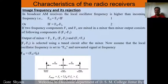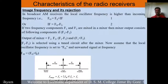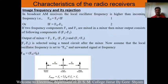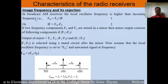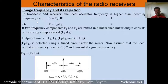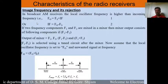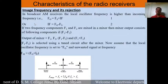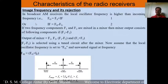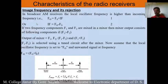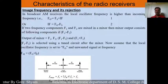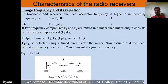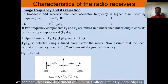Let us see another characteristic known as image frequency and its rejection. In a broadcast amplitude modulation receiver, the local oscillator frequency is higher than the incoming frequency. In the superheterodyne radio receiver, the intermediate frequency (IF) is the difference between the local oscillator frequency and the antenna frequency. So F0 = Fs + IF, and IF = F0 − Fs. This is the intermediate frequency.